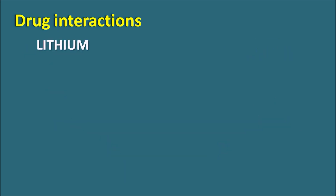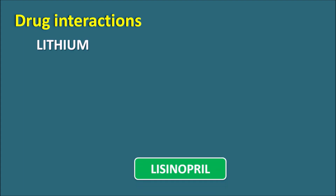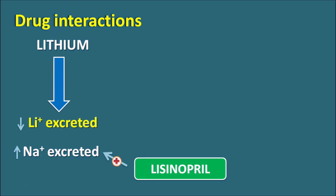Next is lithium. Lisinopril inhibits angiotensin 2 actions, thereby decreasing sodium reabsorption and increasing sodium excretion. When sodium is more excreted, lithium is more retained — lithium excretion is reduced because sodium and lithium are both monovalent. So Lisinopril can increase lithium toxicity, and the dose of lithium should be reduced to prevent toxicity.